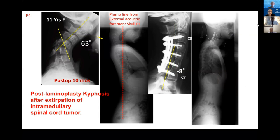This is not a dropped head syndrome — this is a young girl who had post-traumatic kyphosis after extirpation of an intermediary spinal cord tumor. The deformity is flexible and the global spinal balance is not so bad, so we can manage this patient with only cervical fixation and cervical correction.